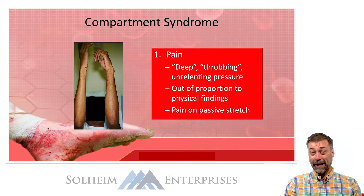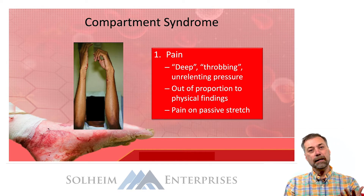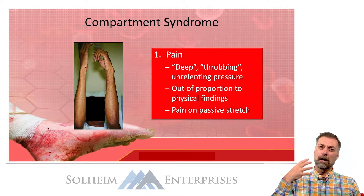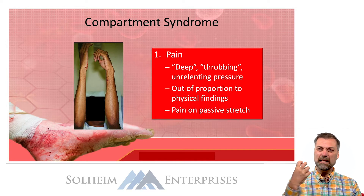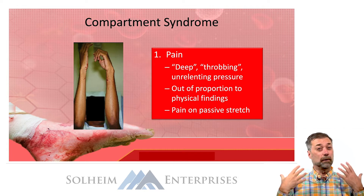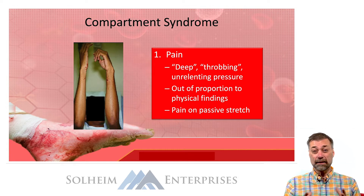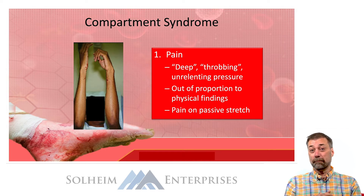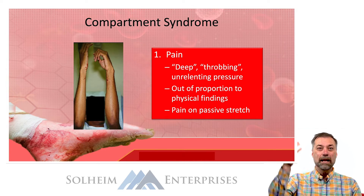The first P is pain. Pain tends to be a very early indicator of compartment syndrome. The pain may be described as a deep, taut, throbbing, pressure-like pain — very uncomfortable, not easily relieved by standard analgesia. It's made worse by movement, even passive movement.